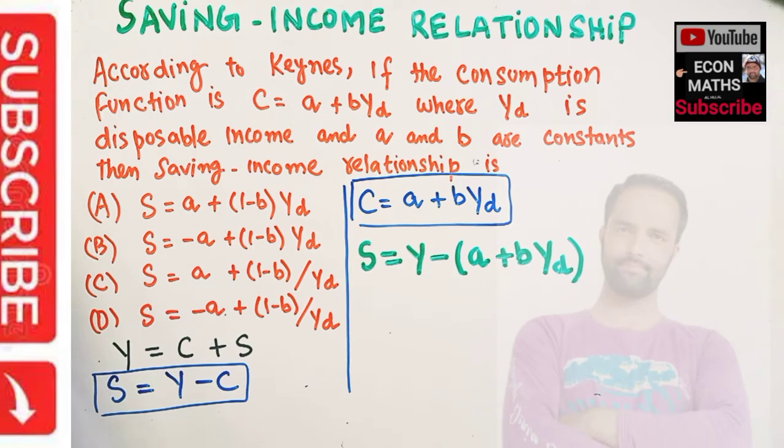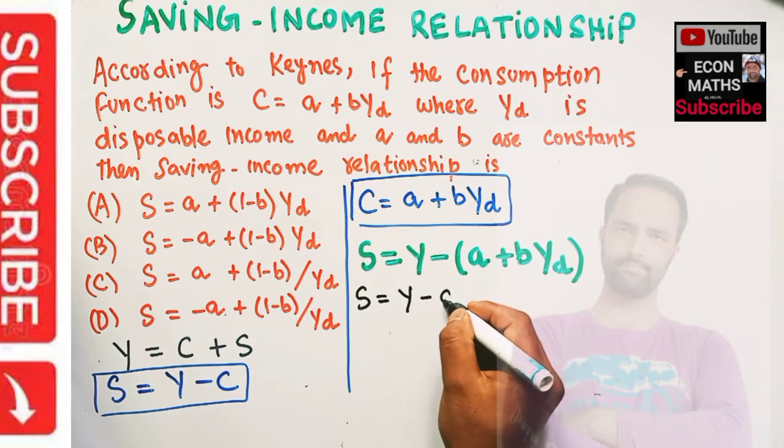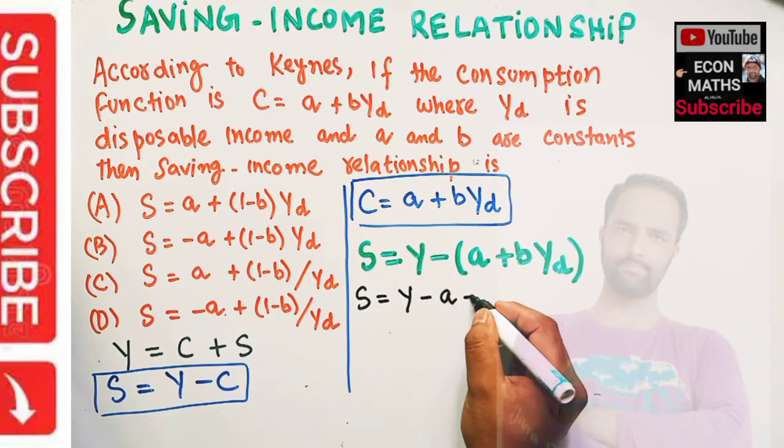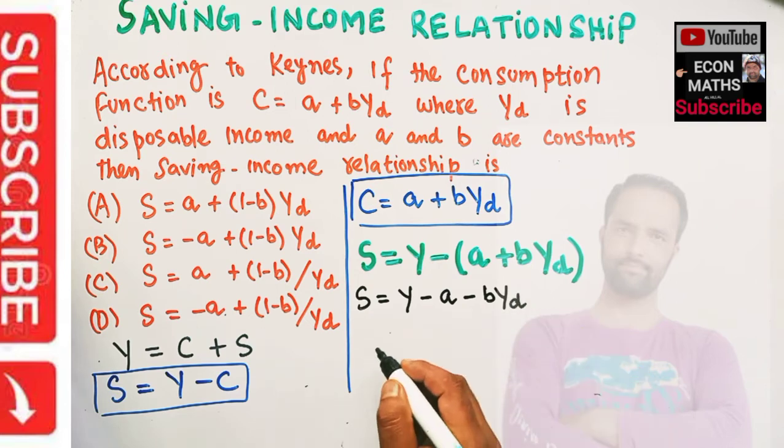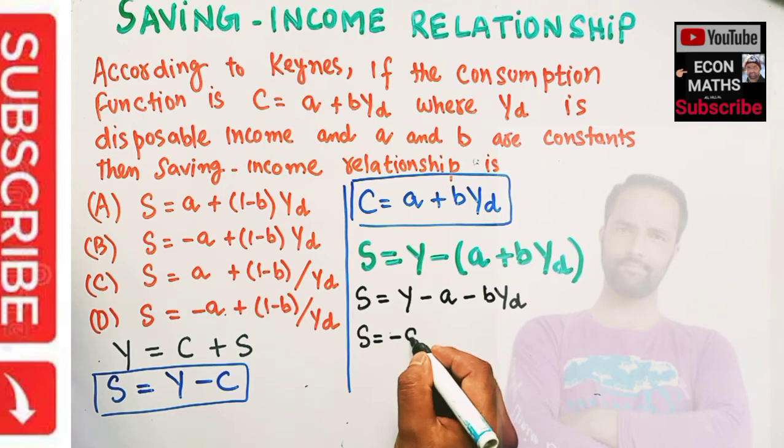Then S will be equal to Y - A - B*Y_D, which gives us S equals, let us write this minus A term first. We have -A,